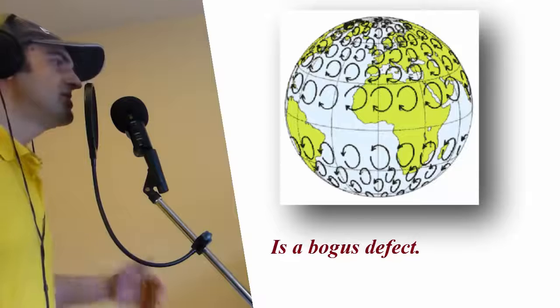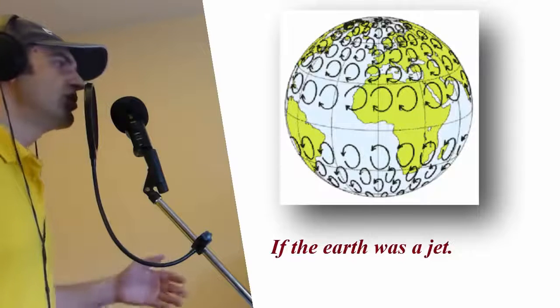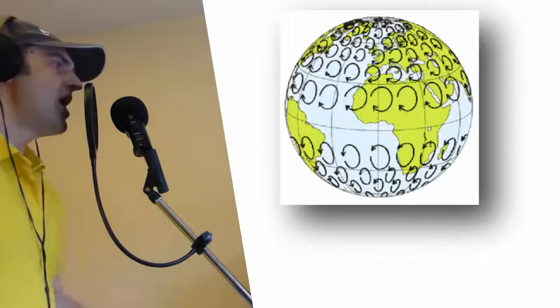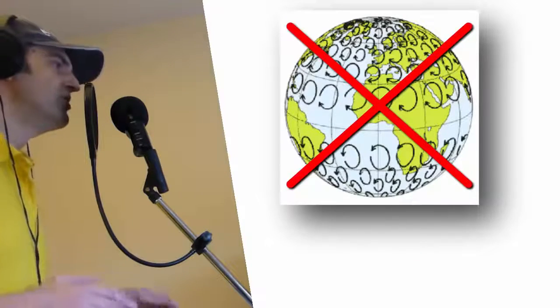Coriolis effect is a bogus defect, if the earth was a jet, then we'd get wet, upset, and that's because there ain't no curvature.